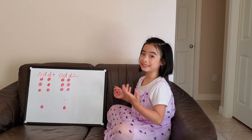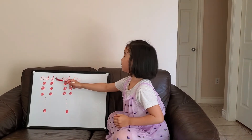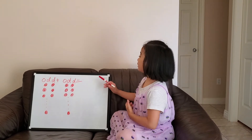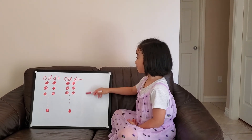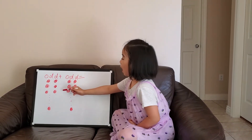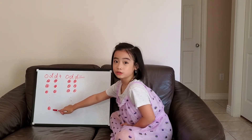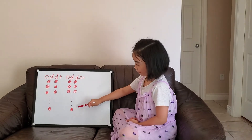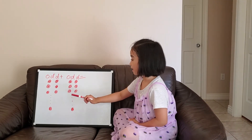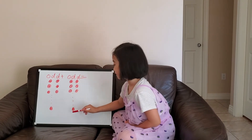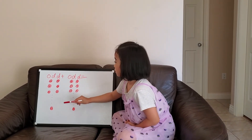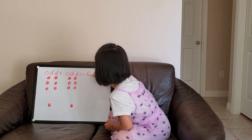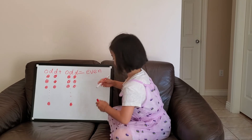Lastly, we look at odd plus odd — is it equal to even or odd? We can look at this picture shown below. Odd will always have one extra leftover, and the other odd will also have one extra leftover. We can pair these leftovers together. So odd plus odd is equal to even.